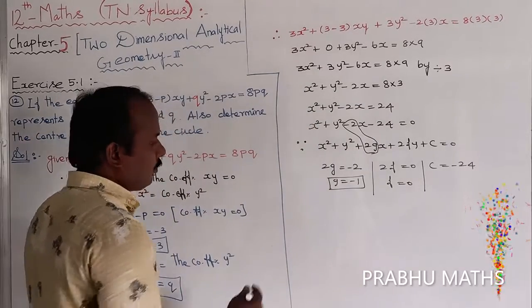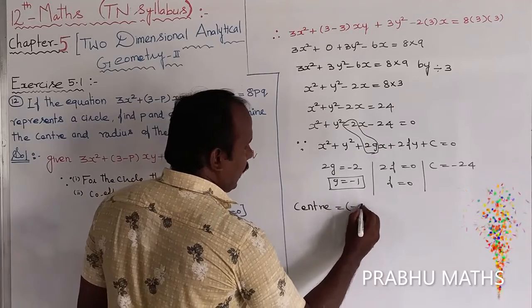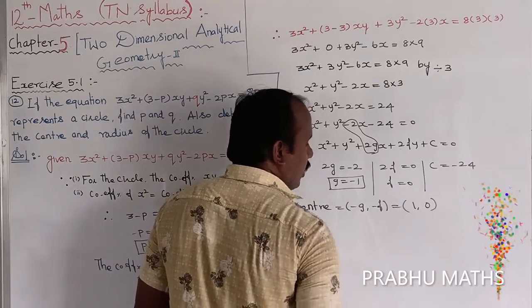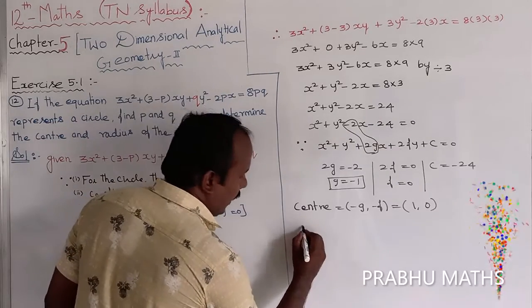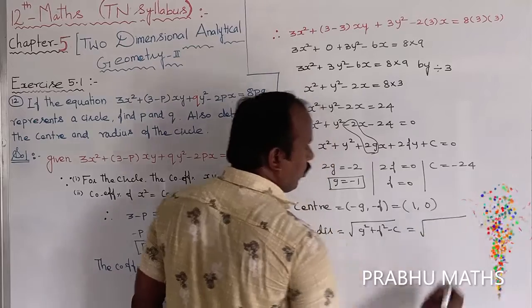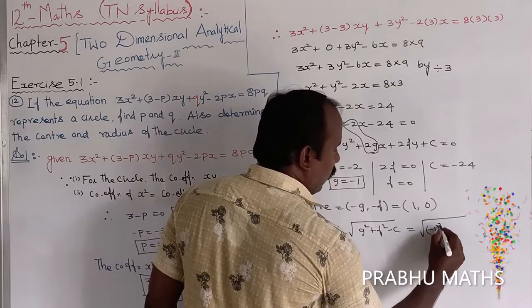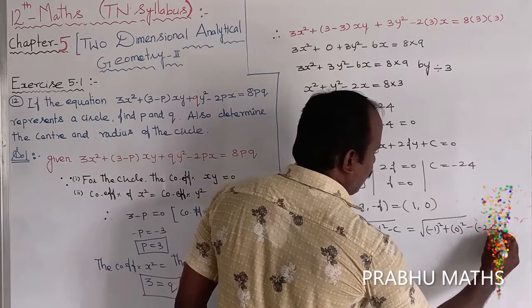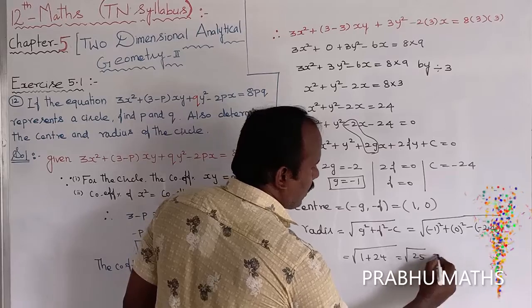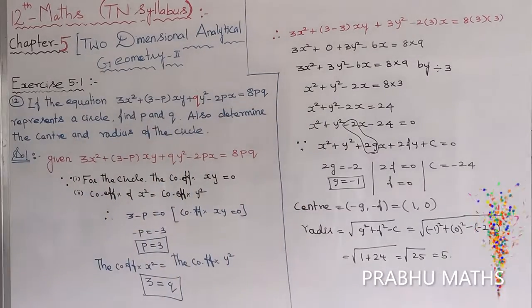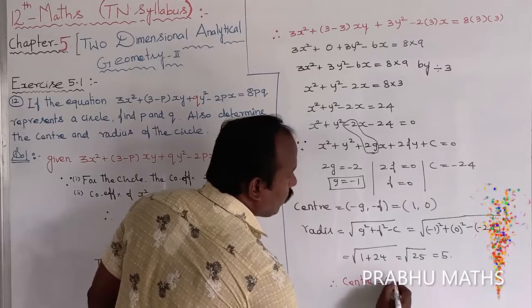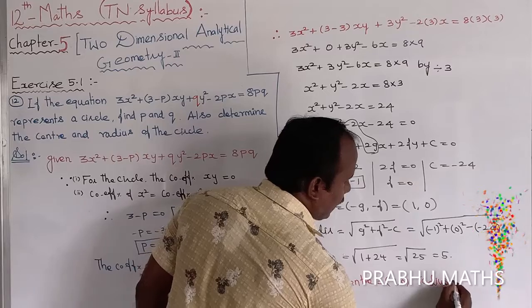The center equals (minus g, minus f) equals (1, 0). The radius equals the square root of g squared plus f squared minus c, which is the square root of (minus 1) squared plus 0 squared minus (minus 24), giving the square root of 1 plus 24, which equals the square root of 25, which equals 5. Therefore, center equals (1, 0) and radius equals 5.